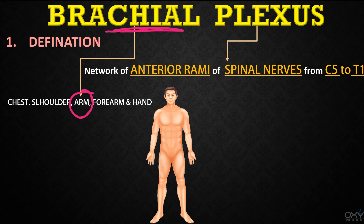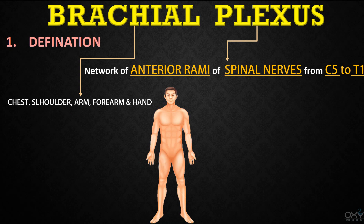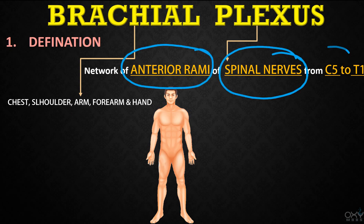For the brachial plexus, we use the word brachial for the chest region, shoulder, arm, forearm, and hand — because these anterior rami of spinal nerves from C5 to T1 supply the chest, shoulder, arm, forearm, and hand region. That is why it is named the brachial plexus.